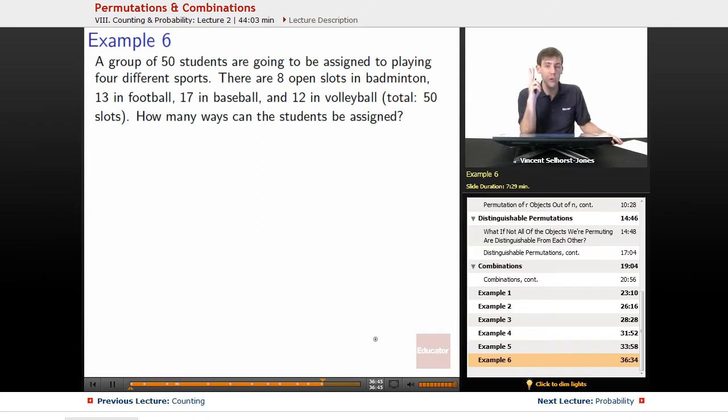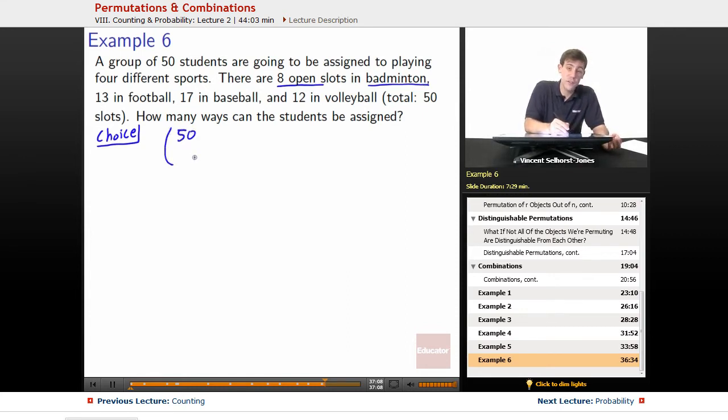We're going to look at this in two different ways. The first way is through the idea of choice. We'll make different choices to begin with. So we start off and let's work on badminton first. We have 8 open slots for badminton. So what we're looking at is how many ways are there to choose 8 players for the badminton group. 50 students, we're choosing from, so 50 choose 8 is all the ways we can choose our badminton group.